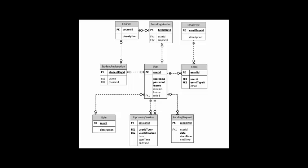Before getting into the project, let us look at the database design. We used only a few tables to make the scheduling system and the hangout work. All users are stored in the user table, which contains both students and tutors. Students and tutors are assigned courses, email IDs, and roles. The hangout sessions are stored in the upcoming sessions and pending requests tables.